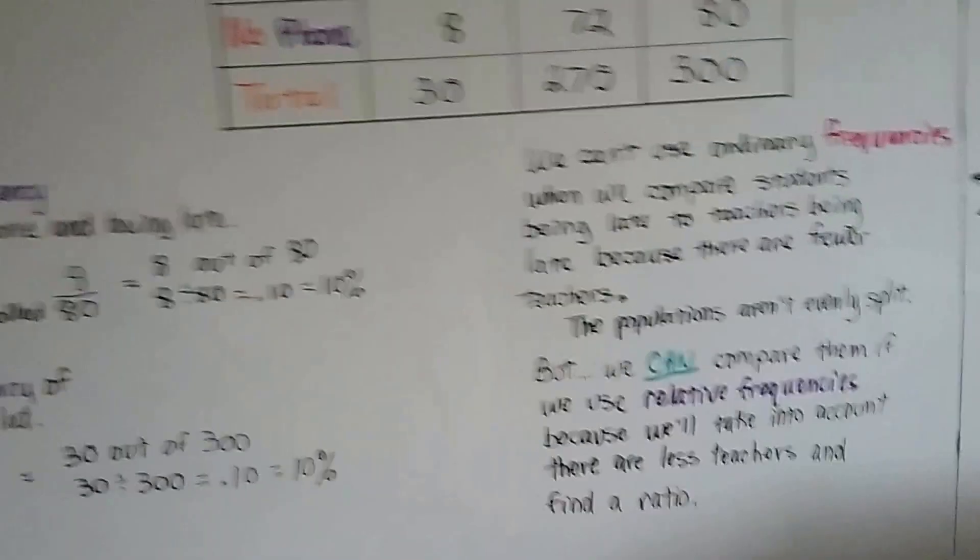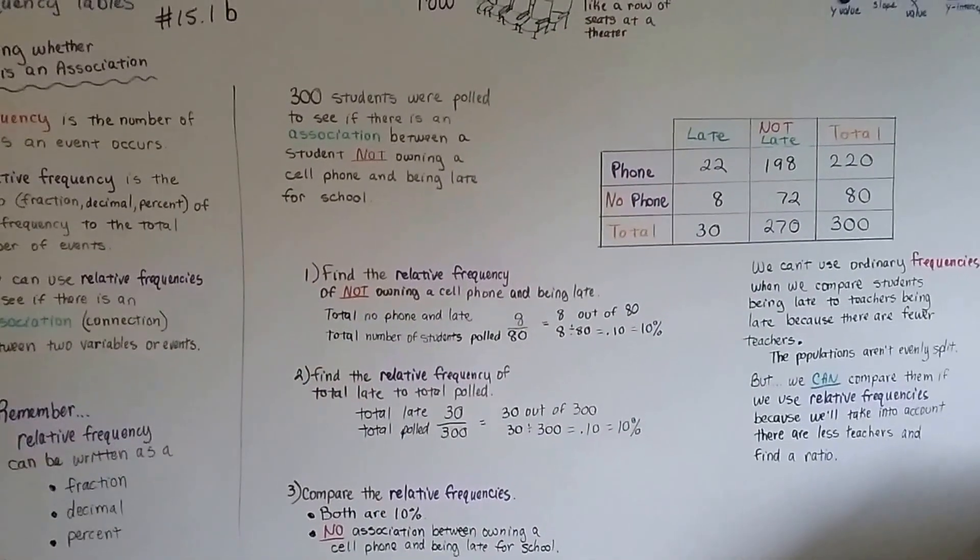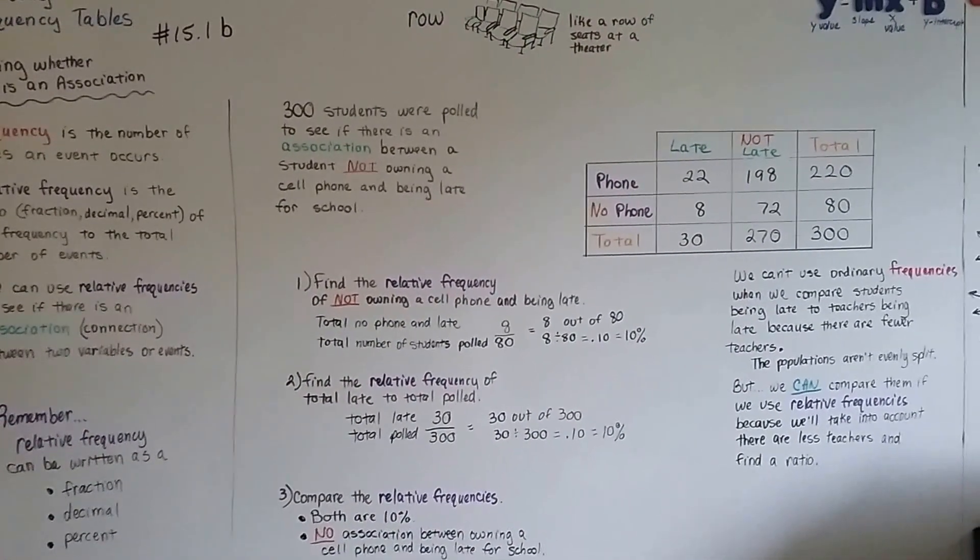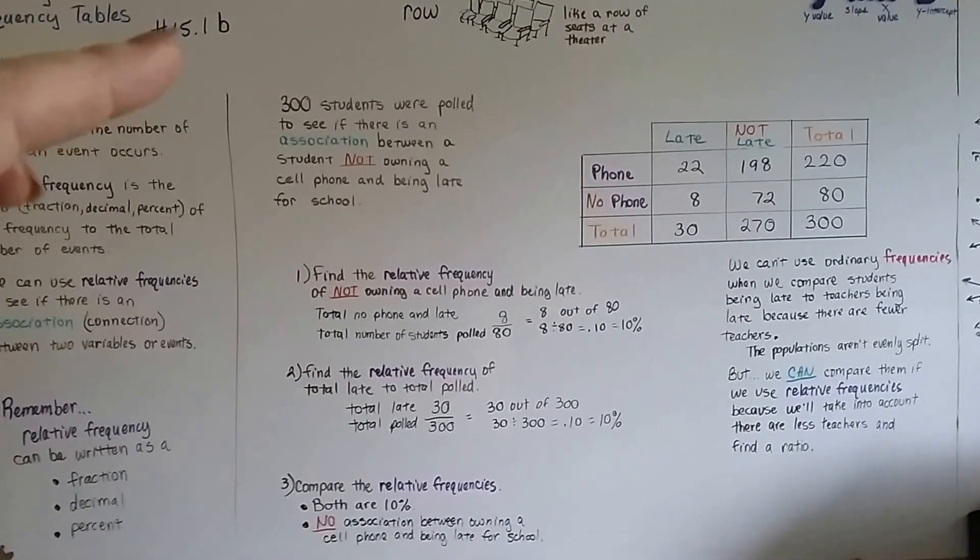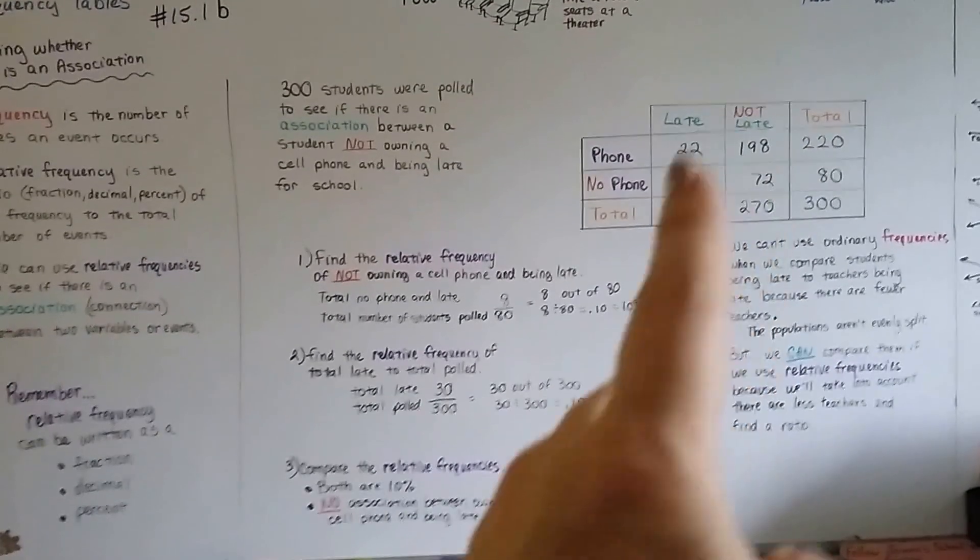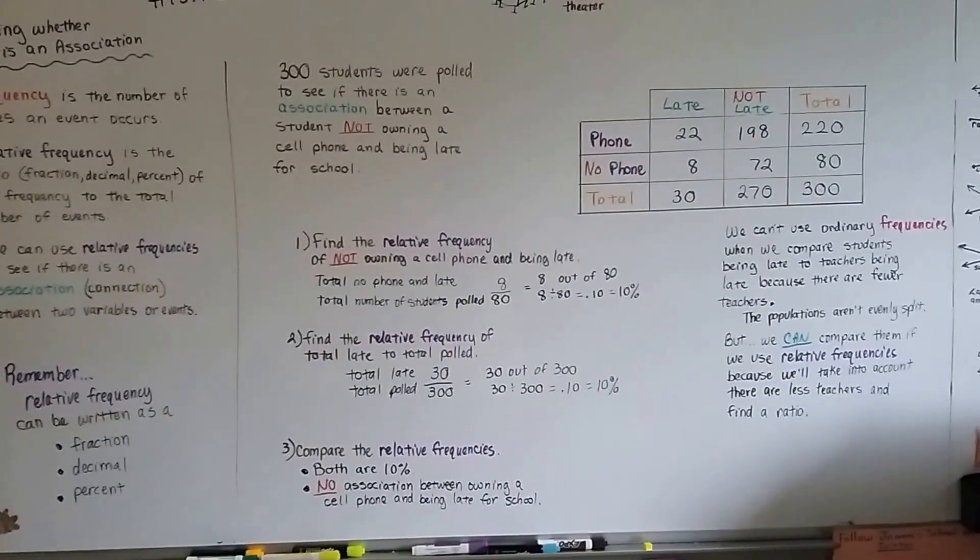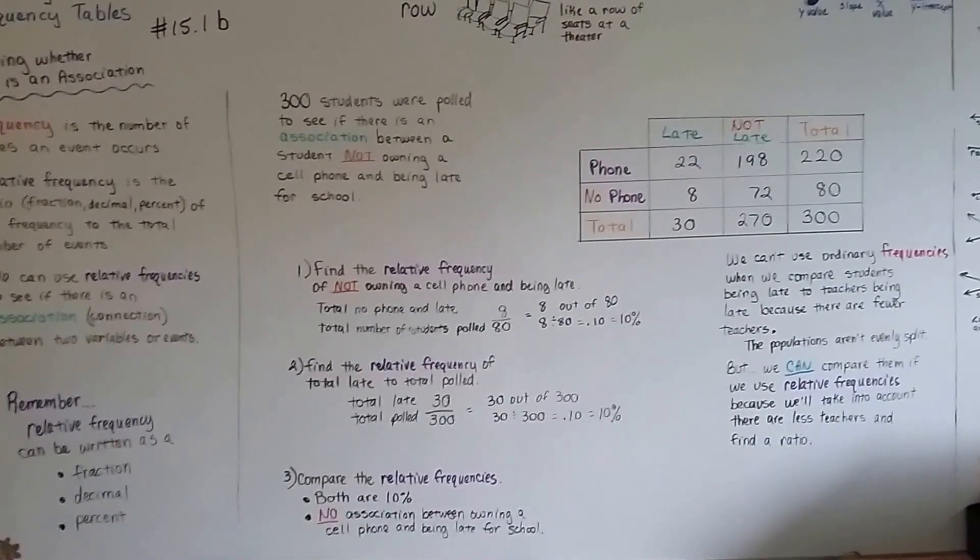That is deciding whether there's an association with relative frequencies on a two-way frequency table. We're going to continue on. And in our next video, 15.1c, we're going to have a partially filled in table and we're going to try to figure out how to fill in the rest of the way and see what's going on with it. All right. I'll see you there. Bye.